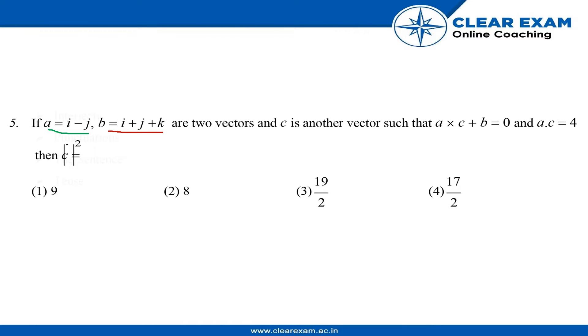...such that a cross c plus b equals zero, and a dot c equals four. Then we have to calculate the magnitude of c squared. The options given are nine, eight, nineteen by two, and seventeen by two.